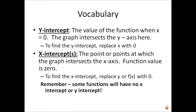The x-intercepts are the point or points at which the graph intersects the x-axis. At the x-intercept, the function value is 0. To find the x-intercept, replace y or f(x) with 0 — in our cases, this means replacing the whole left-hand side of the function with 0. It's important to remember that some functions will have no x-intercept or y-intercept.